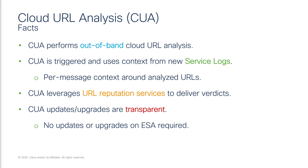Kua is a new system launched with AsyncOS 13.5. It can detect certain types of threats today, but more capabilities are being added regularly. As Kua is updated and enhanced, the Cisco email security administrator does not need to be concerned with updating on-box engines or upgrading AsyncOS to get the latest Kua release. All of this is handled from the cloud side, requiring no action from the administrator.